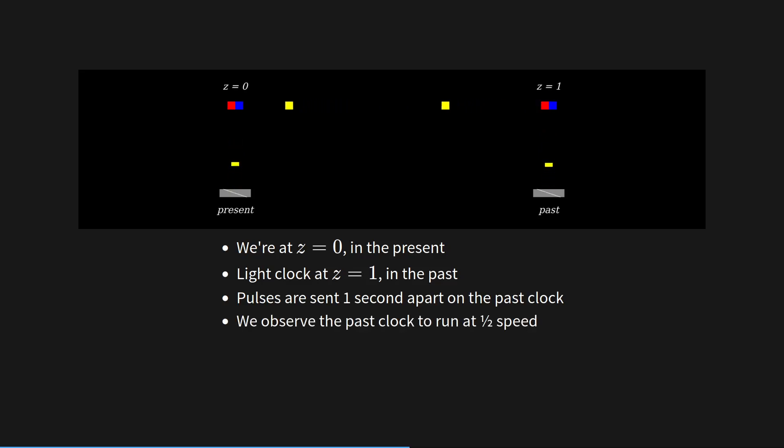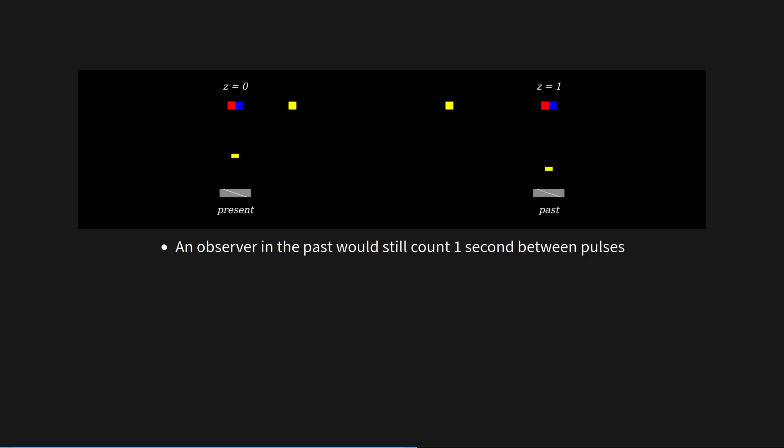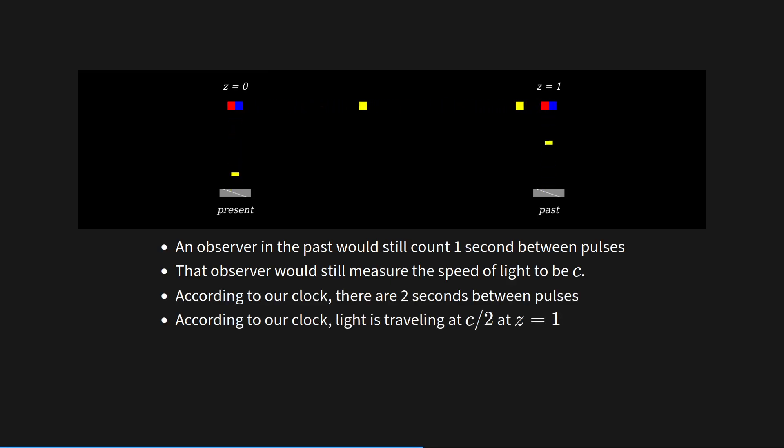Let's say that another pulse is sent into space whenever the second passes. So here we have us at Z equals 0 in the present. And there's our light clock. Let's say there's a light clock in the past at Z equals 1. Pulses are sent one second apart on the past clock, but we observe the past clock to be running at half speed. And our clock runs at twice its speed. So our clock counts two seconds between the pulses. Now the observer in the past would still count one second between the pulses, and the observer would still measure the speed of light to be C. According to our clock, there are two seconds between the pulses. So according to our clock, light is traveling at C over 2, or half of C, at Z equals 1.